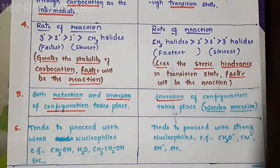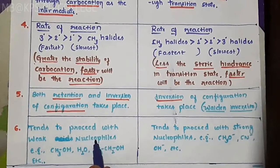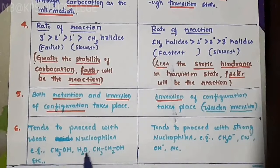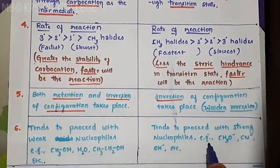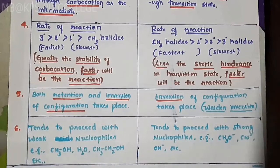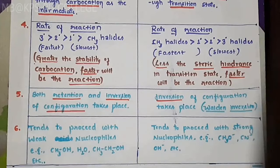Sixth point: SN1 mechanism tends to proceed with weak nucleophiles such as water (H2O), alcohol, and ethanol. SN2 mechanism tends to proceed with strong nucleophiles such as CH3O⁻, CN⁻ (cyanide), and OH⁻. This is a key difference between SN1 and SN2 mechanisms.